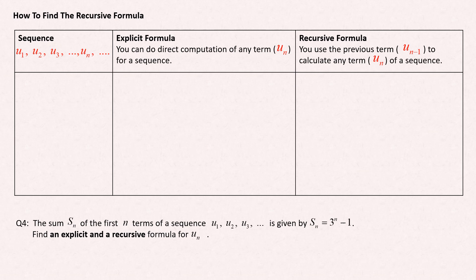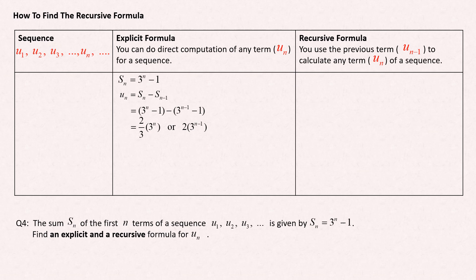In question number four, the formula given is not for term n but for the sum of the first n terms. To find the explicit formula, you use the relation between the sum of the first n terms and the term n. Applying this relation gives you the explicit formula for the sequence.